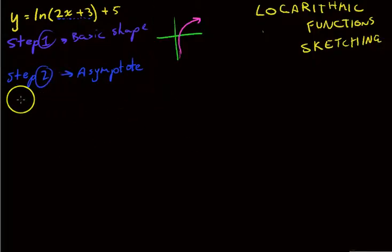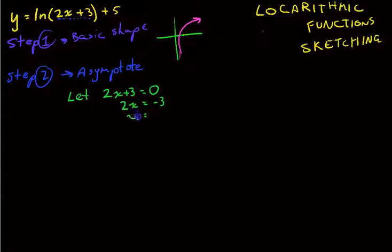So to find our asymptote, we let 2x plus 3 equals 0. So if we let 2x plus 3 equals 0, we'll find out where our asymptote is. So 2x equals negative 3, x equals negative 3 on 2. So x equals negative 1.5. So that's our asymptote. So by letting this thing here equal 0, that's how we'll find our asymptote. A little more difficult than the exponential, where we just looked at the d value.